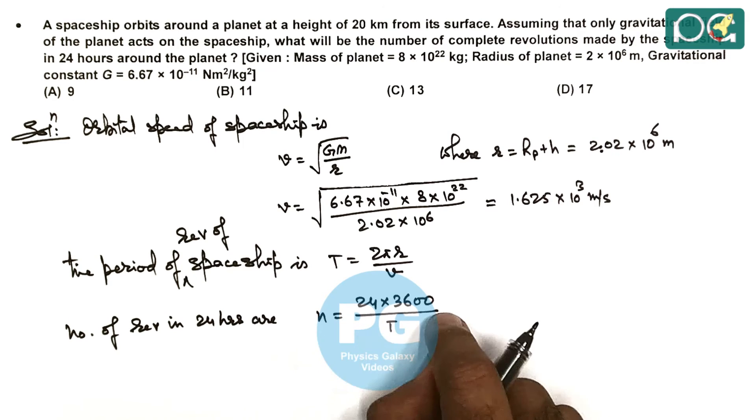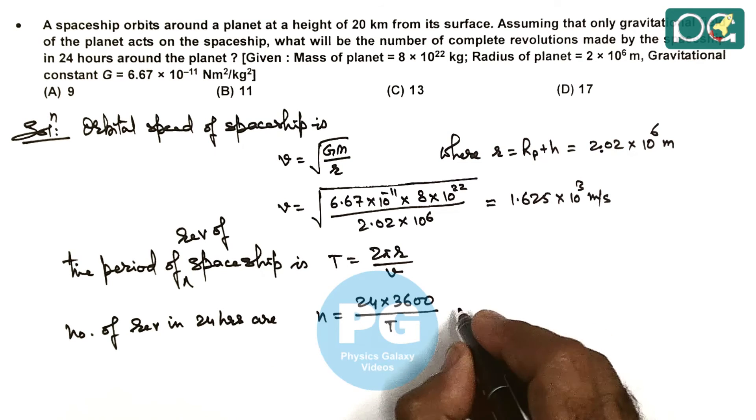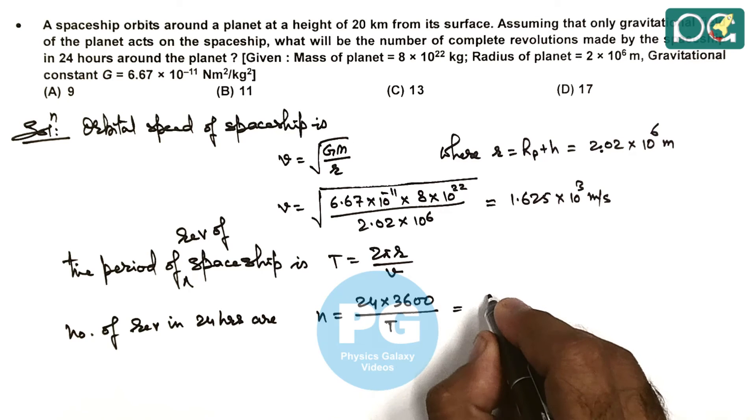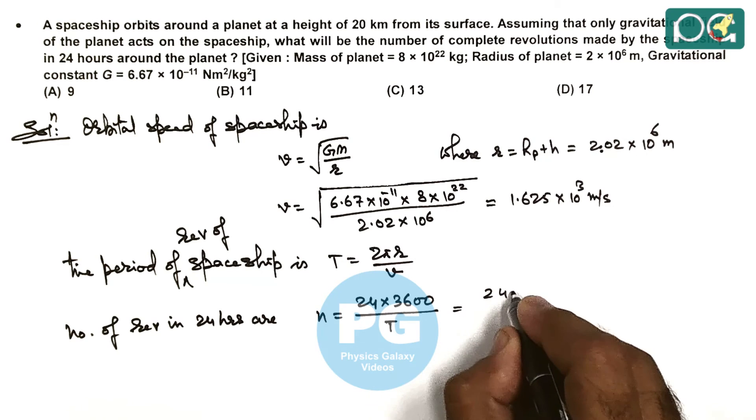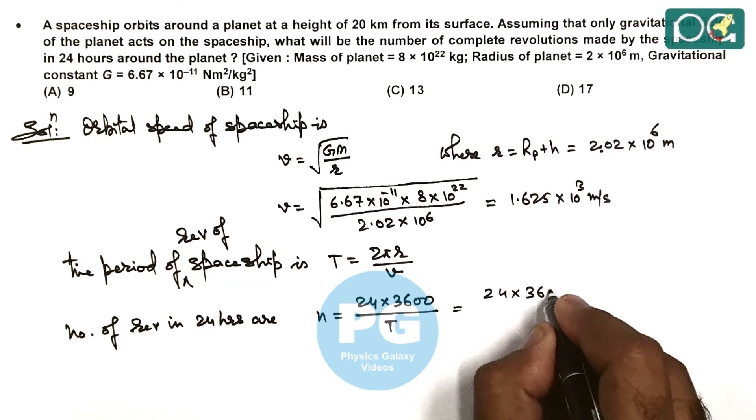Since T is the time period of one revolution, we can substitute the values. This is (24 × 3600) divided by 2π, where π = 3.14, r = 2.02 × 10⁶ m, and v = 1.625 × 10³ m/s.